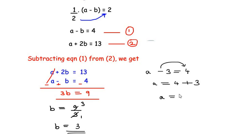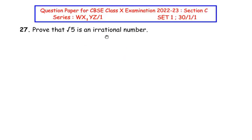So the greater number is 7 and the smaller number is 3. Now let us move on to the next question. The 27th question is from the real numbers chapter: prove that square root of 5 is an irrational number.